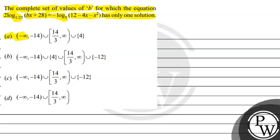Option A: open interval (−∞, −14) union semi-closed interval [14/3, ∞) union {4}. Option B: open interval (−∞, −14) union {4} union semi-closed interval [14/3, ∞) union {−12}. Option C: open interval (−∞, −14) union semi-closed interval [14/3, ∞) union {−12}. Option D: open interval (−∞, −14) union semi-closed interval [14/3, ∞).